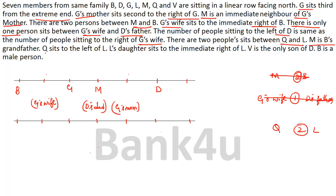Next clue: M is B's grandfather, so M is a male person. M is placed with one gap and B is placed — that's confirmed. The following clue: Q sits to the left of L. We know Q or L can be at two positions. If L is placed at one seat, Q must be to the left — counting two seats, Q is placed at the correct position.